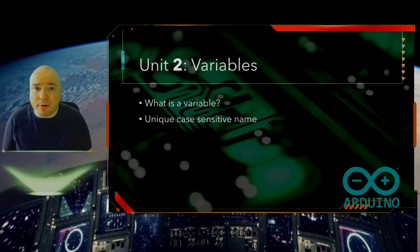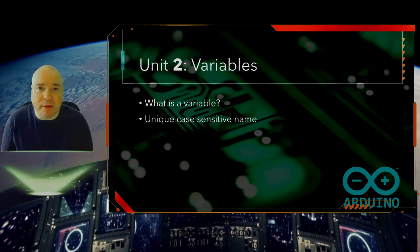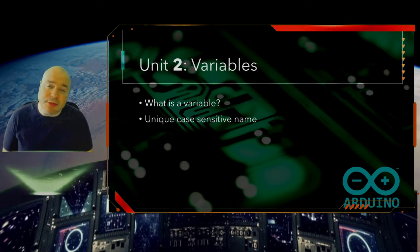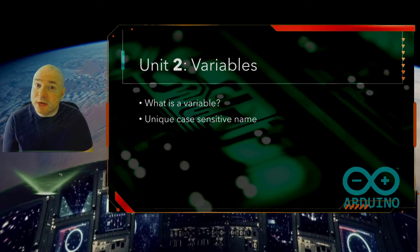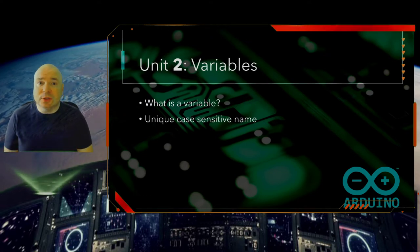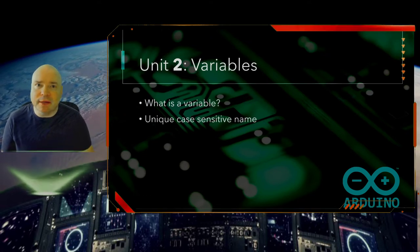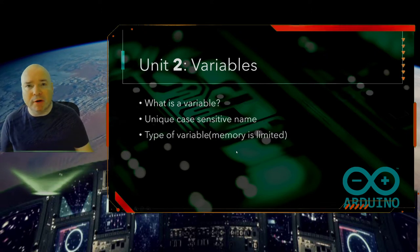So if we have a capital M, let's say, in our variable, we have to make sure we always use a capital M in that variable. Otherwise, Arduino will think they are two different variables, which could become problematic later if we mean for them to be one variable.